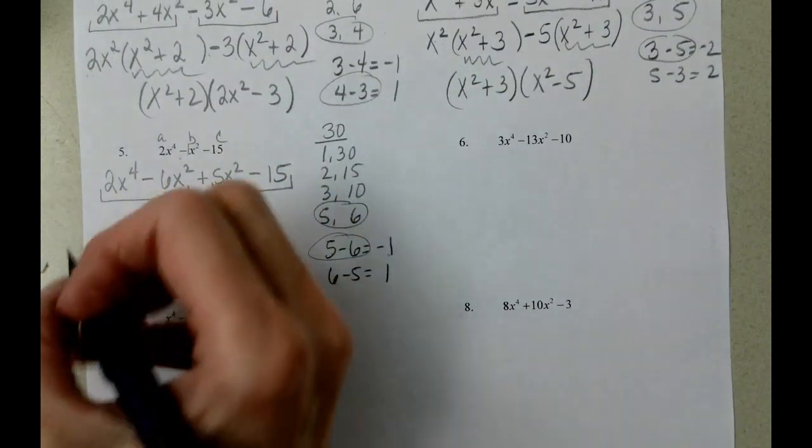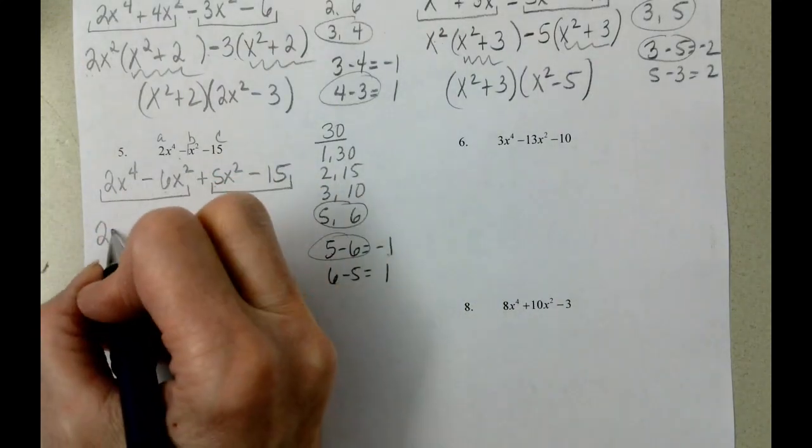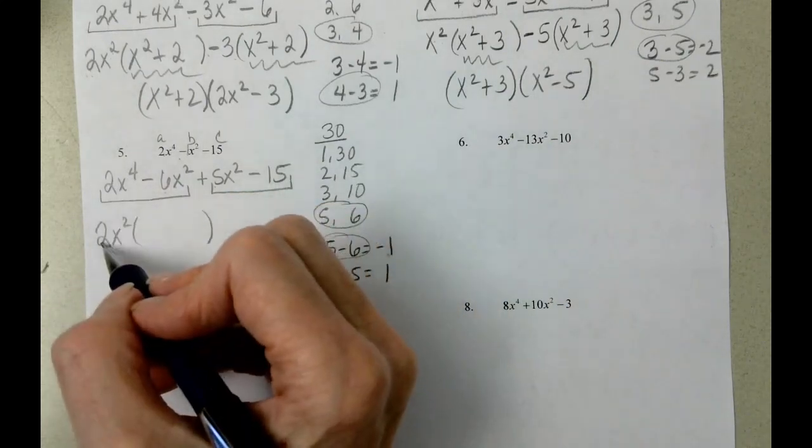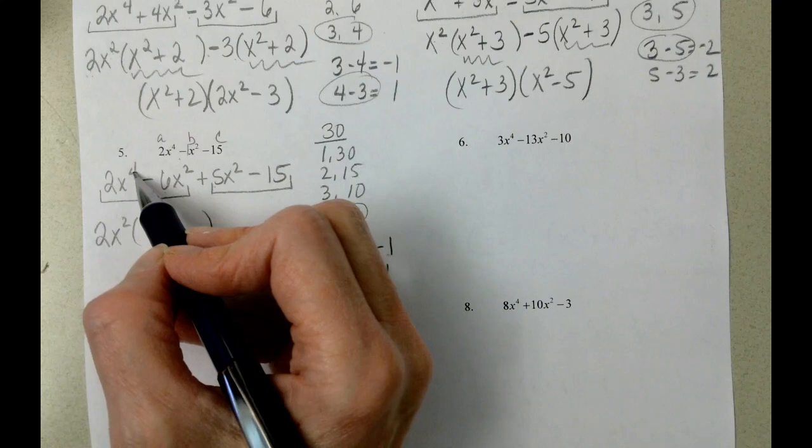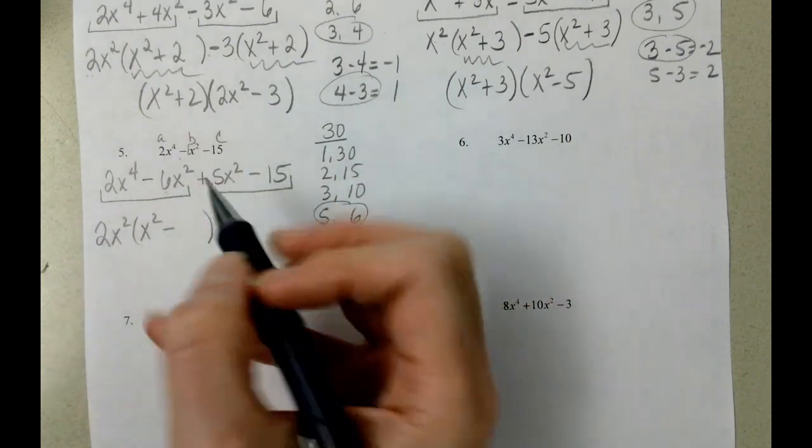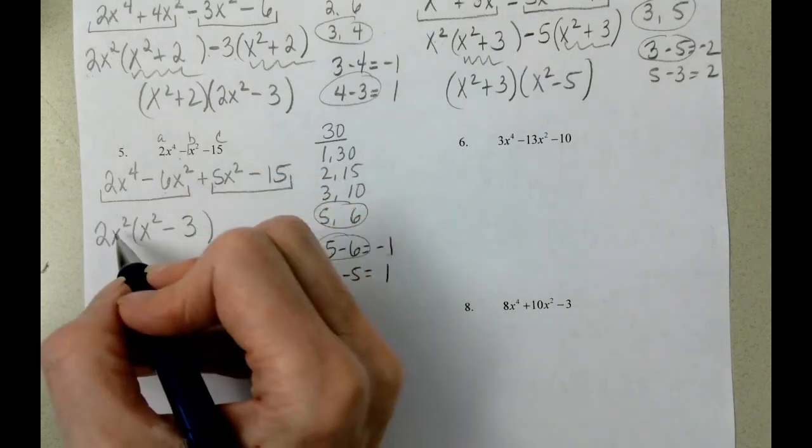Biggest number that divides into 2 and 6 is 2. Between x to the fourth and x squared, it's the lowest exponent. 2 divided by 2 is 1. We had 4 x's, we took out 2 of them, we still have 2. 6 divided by 2 is 3. We had 2 x's, we took them out.